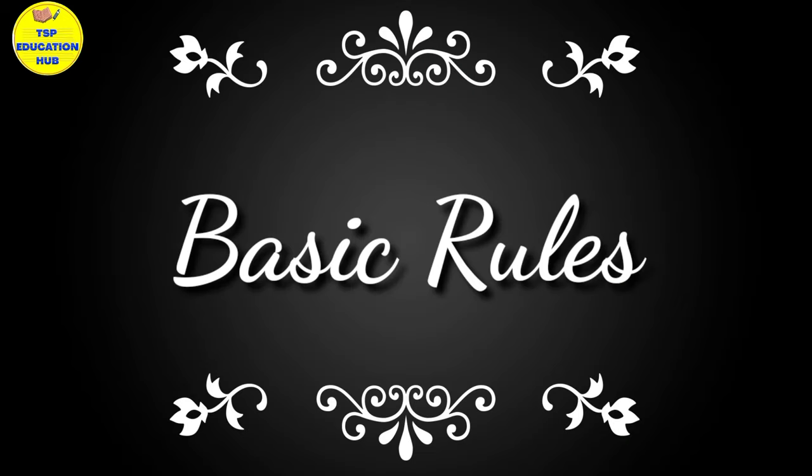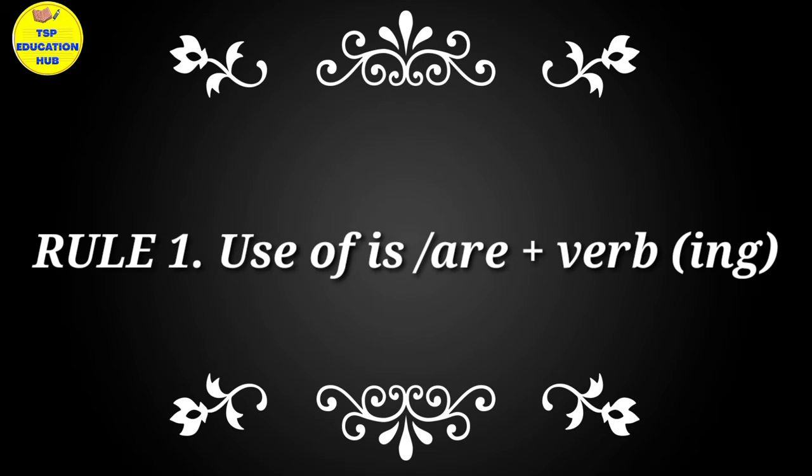First, let's look at the rules. In picture composition, you have to use the words 'is' or 'are'. These are helping verbs. With whatever main verb you use, you have to add '-ing' form. Our sentence will be in present continuous tense.